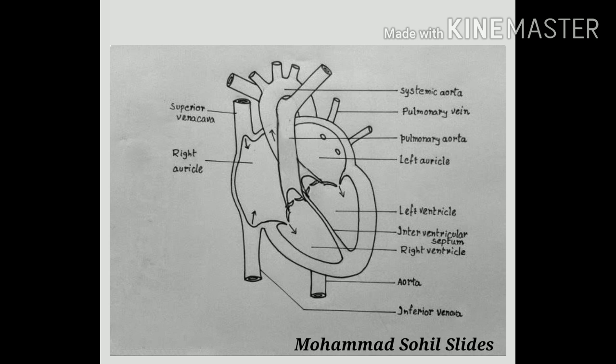The left atrium receives blood from the lungs with the help of four pulmonary veins. Blood then passes from the left atrium to the left ventricle with the help of the bicuspid valve. The wall of the left atrium is thicker than the right, and it is smaller and roughly cuboidal in shape.